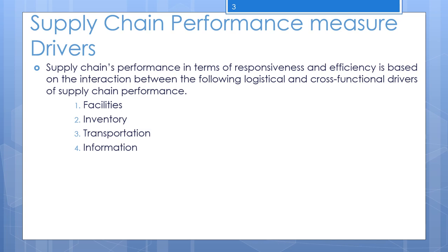The decisions regarding facilities are a crucial part of supply chain design. Identifying the components of facility decisions that companies must analyze: first, for production facilities, firms must decide whether they will be flexible, dedicated, or a combination of both. Flexible capacity can be used for many types of products but is often less efficient, whereas dedicated capacity can be used for only a limited number of products but is more efficient. Firms must also decide whether to design a facility with product focus or functional focus.